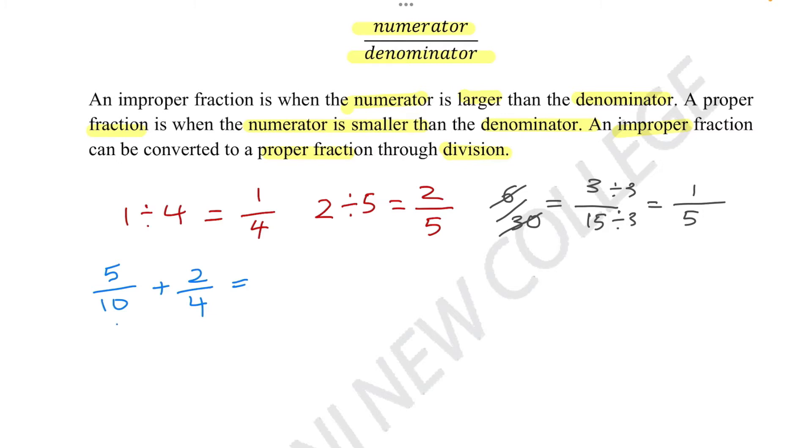By that, for example, we could times this by 2, and then we'll also have to times the top by 2. And then we can times this by 5, and we can times the top by 5. And then we get 20 over 10 plus 20 over 10, which then equals 20 over 20, which equals 1.